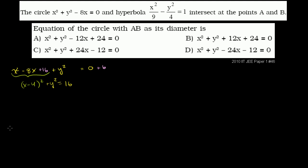So the circle is going to look something like this. That's my x-axis, that's my y-axis. Its center is at 4, 0, and its radius is 4, since radius squared is 16.